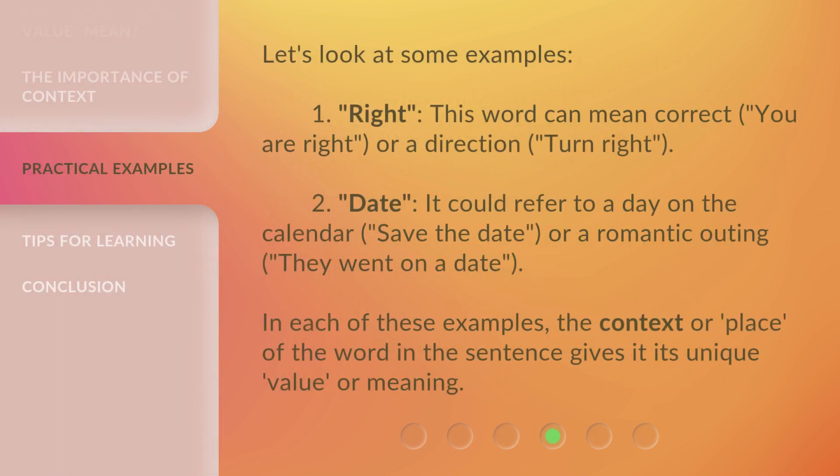Let's look at some examples. First, 'right' — this word can mean correct, as in 'You are right,' or a direction, as in 'Turn right.' Second, 'date' — it could refer to a day on the calendar, as in 'Save the date,' or a romantic outing, as in 'They went on a date.' In each of these examples, the context or place of the word in the sentence gives it its unique value or meaning.